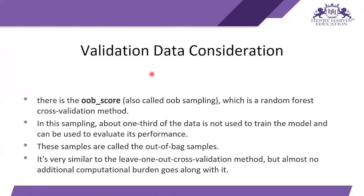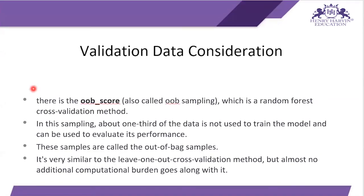For validation data consideration, there is the oob_score, also called OOB sampling, which is a Random Forest cross-validation method. In this sampling, about one third of the data is not used to train the model and can be used to evaluate its performance. These samples are called out-of-bag samples. It is very similar to the leave-one-out cross-validation method but with almost no additional computational burden.